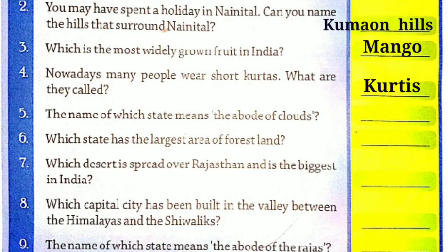Question number five: The name of which state means 'the abode of clouds'? ऐसा कौन सा राज्य है जिसका अर्थ होता है 'the abode of clouds', यानी जहाँ बादलों का निवास होता है? इसका आंसर होगा — Meghalaya.